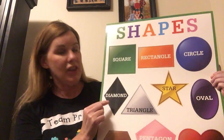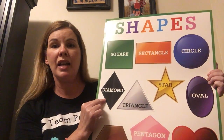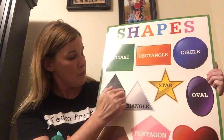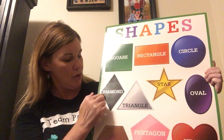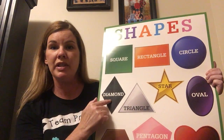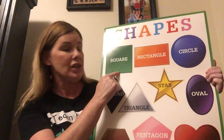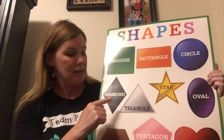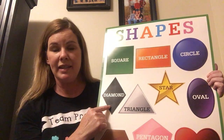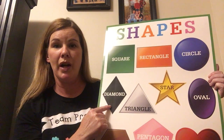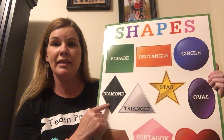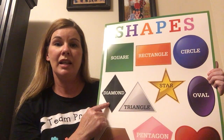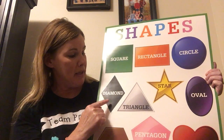What about this shape right here? It has four sides — one, two, three, four. Four sides, just like the square up here has four sides. But this is not a square. What is this shape? It is a diamond.